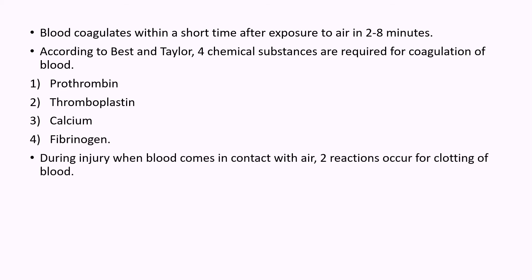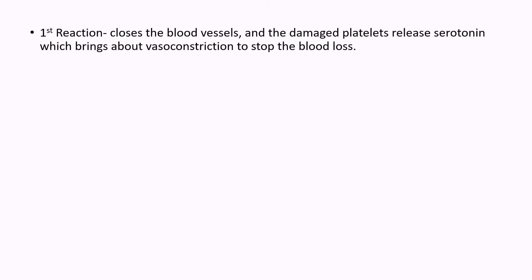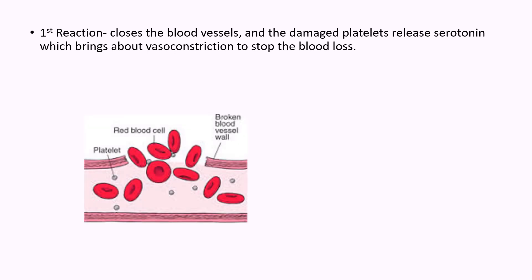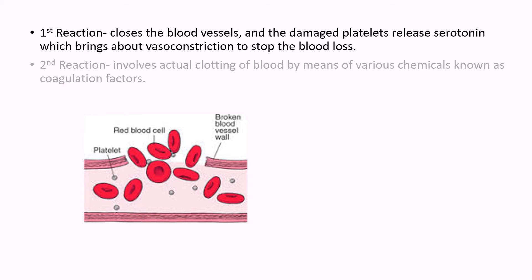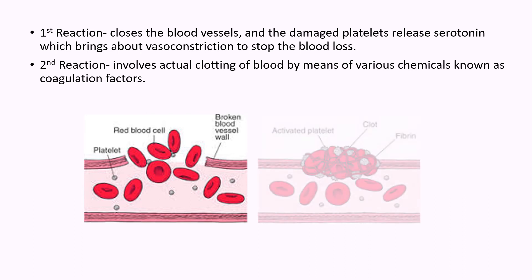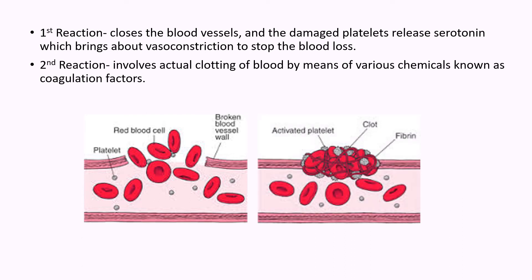During injury, when blood comes in contact with air, two reactions occur for clotting of blood. The first reaction closes the blood vessels, and the damaged platelets release serotonin, which brings about vessel constriction to stop the blood loss. The second reaction involves actual clotting of blood by means of various chemicals known as coagulation factors.